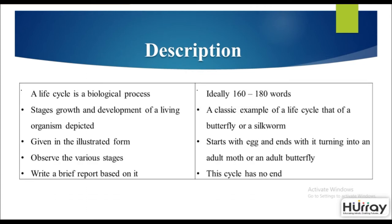A life cycle is a biological process which details the stages of growth and development of a living organism, usually depicted in an illustrated image. You have to observe the various stages mentioned, write down points based on that, and then write a report. You are ideally suggested to write 160 to 180 words.